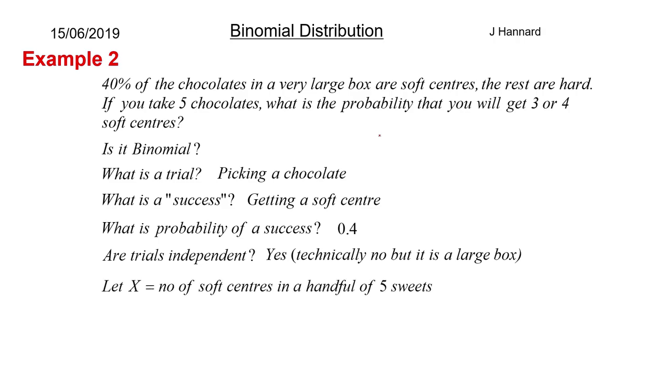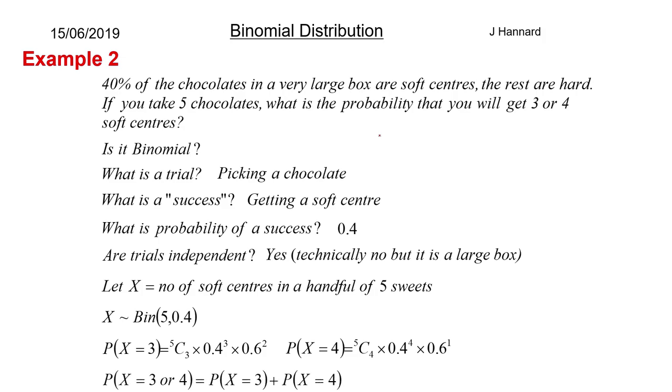So let X equal the number of soft centers in a handful of five sweets. So we've got five trials because we've got five sweets and a probability of success being 0.4. We want the probability that you get three or four soft centers. So the probability of three is 5C3, success to the three, failure to the rest. Four successes is 5C4, success to the four, failure to the rest. So the probability of three or four is those probabilities added together. So we get 0.2304 plus 0.0768 which equals 0.3072. So there you go, that's your answer. Easy peasy.